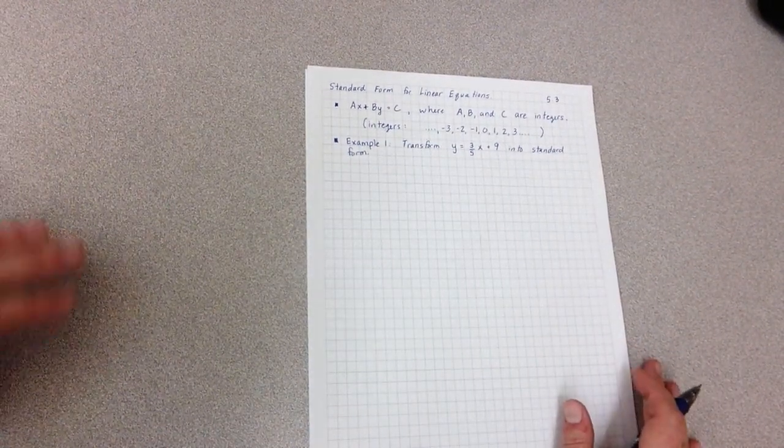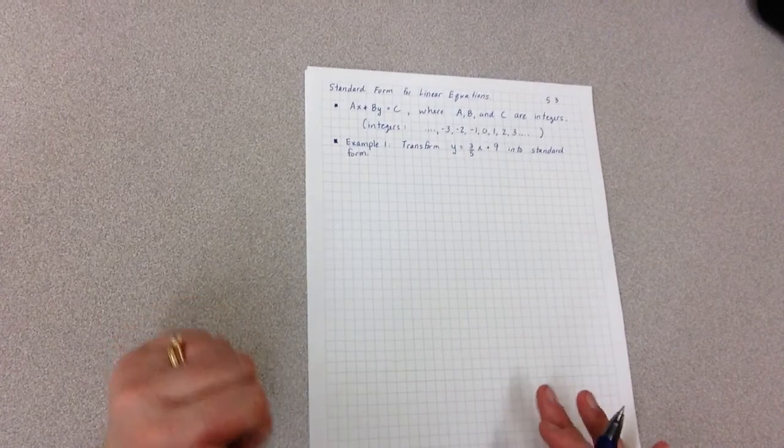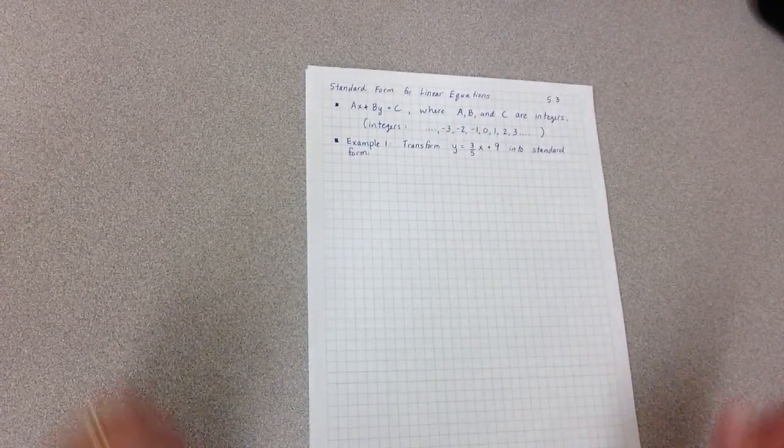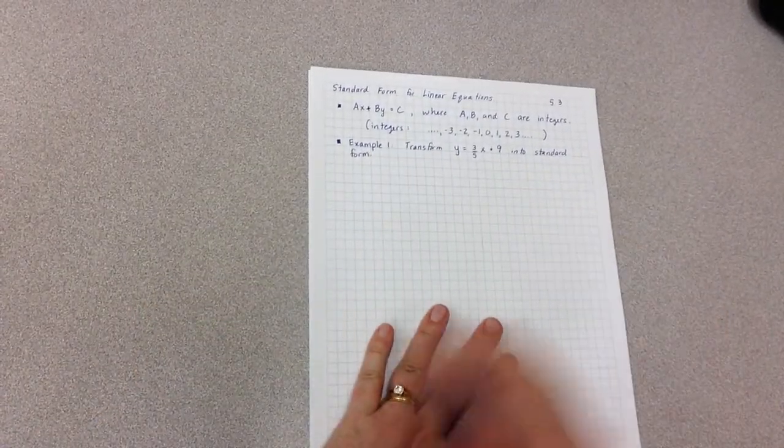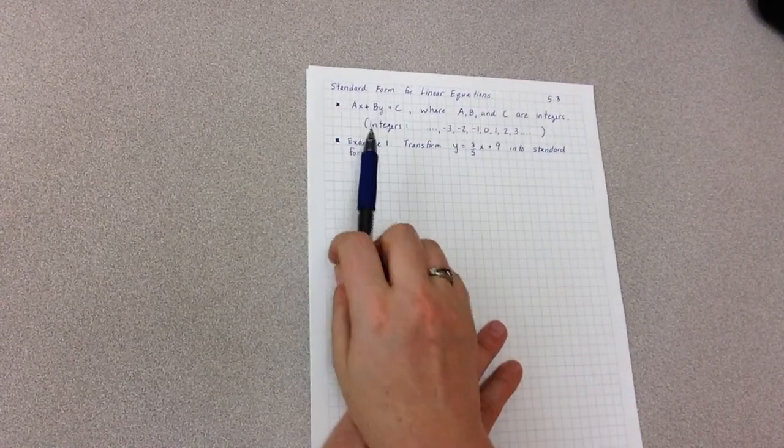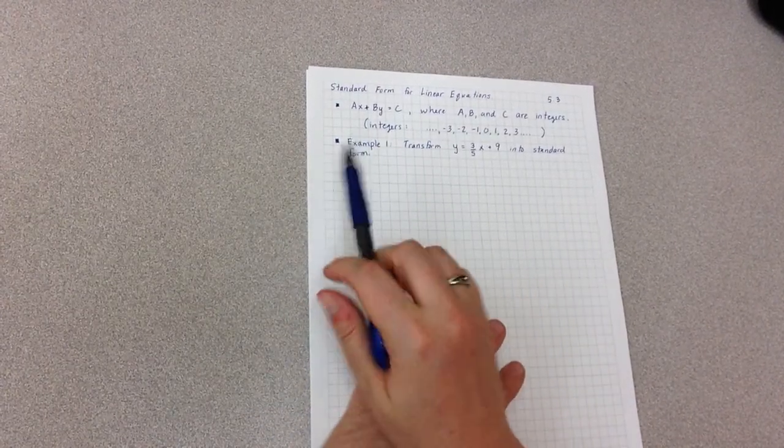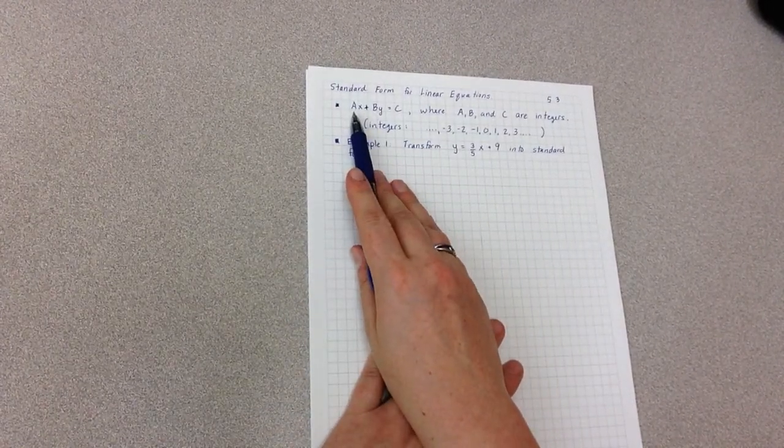In these notes we'll be looking at the standard form for linear equations, corresponding with section 5.3 in the book. First, we want to talk about what standard form is. Standard form is when we have ax plus by equals c.